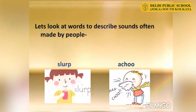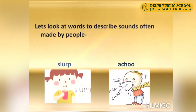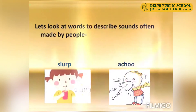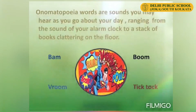Let's look at the words which describe sounds often made by people. Slurp — whenever you are having your spaghetti or sipping your favourite chocolate drink, you make the sound slurp. Whenever you catch a cold and you sneeze, you make the sound achoo. Words like bam, boom, broom, tick tock are sound words — onomatopoeia — which you may hear as you go about your day.